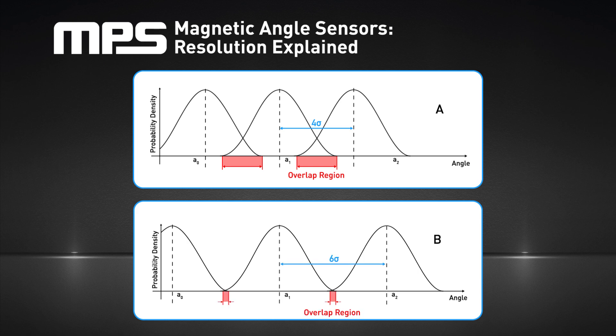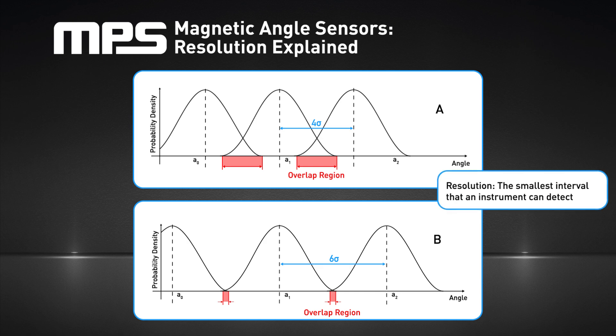The US National Institute of Standards and Technology defines resolution as the ability of the measurement system to detect and faithfully indicate small changes in the characteristic of the measurement result. Resolution is then the smallest interval that an instrument can detect. To determine this interval, we will assume that the distribution of random errors follows the Gaussian distribution.